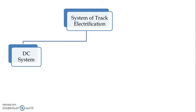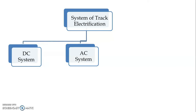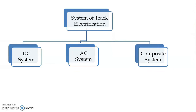We have DC system as well as AC system, and we have additionally a composite system. Track electrification systems are broadly classified into three categories, and we have sub-categories also.